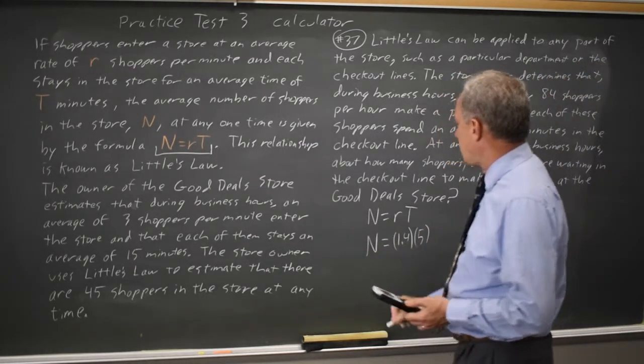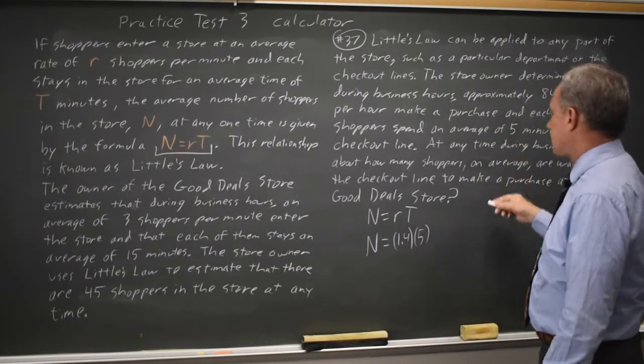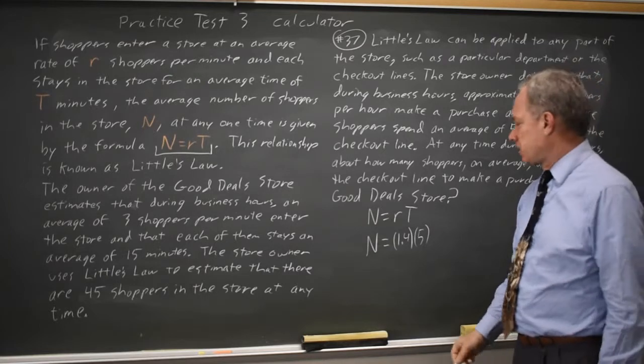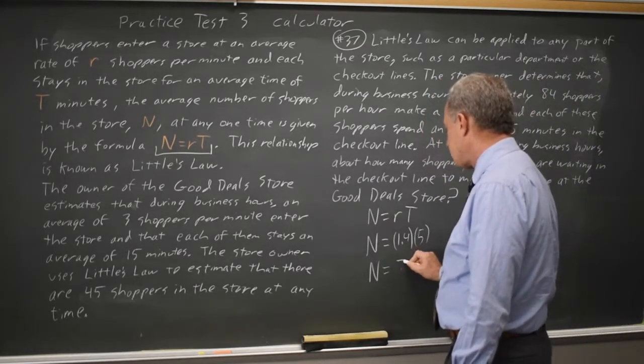And that product will give me n, where n is how many shoppers on average are waiting in the checkout line. So n equals 1.4 times 5 is 7.